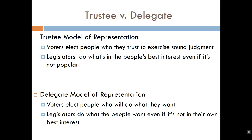Another distinction needs to be made: the difference between trustees and delegates in government. The big difference has to do with our beliefs about the proper role of an elected official. Under the trustee model of representation, elected officials are chosen by voters to do what is in the people's best interest rather than simply complying with what the people want. In this model, elected leaders are chosen because voters trust them to exercise sound judgment and exhibit benevolent professional expertise necessary to make policies which, while not necessarily popular, will ultimately work out in the people's best interest.